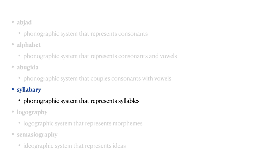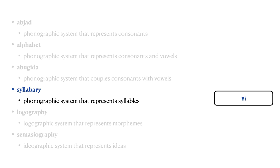Now, let's look at systems that are pure syllabaries — systems where each symbol represents a syllable. These are phonographic systems. Cherokee is an example of a syllabary, as is Yi. Yi is notable in that the Yi syllabary actually does have a single symbol for each syllable in the language, whereas Cherokee and most other syllabaries don't.